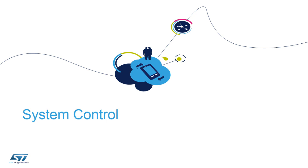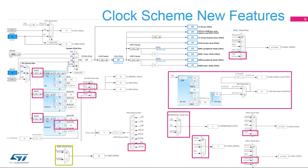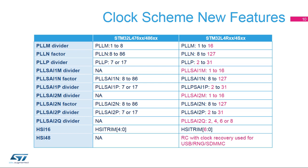The STM32L4 Plus brings some new features in clock configuration management. The main differences with the STM32L476/L486 devices are highlighted with pink squares. This table highlights the differences related to the RCC, mainly for PLL dividers and factors, between STM32L4R/S-series and STM32L476/L486 microcontrollers.